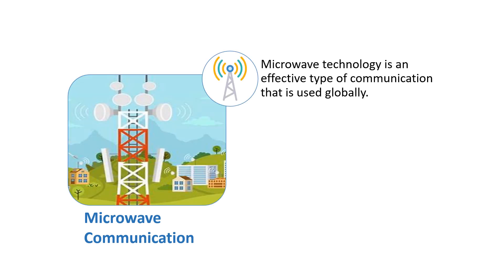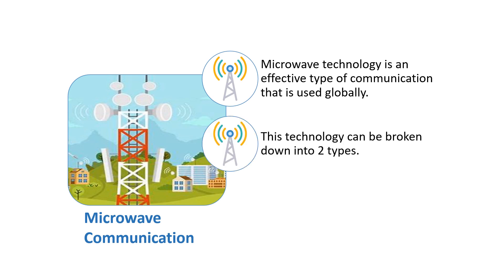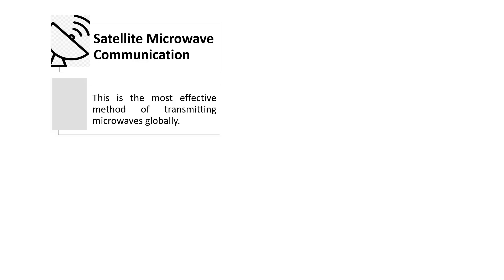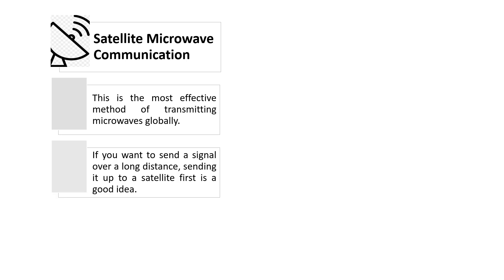The next type of wireless communication is microwave communication. This microwave technology is an effective type of communication used globally and is divided into two types. The first is satellite microwave communication, which is the most effective method of transmitting microwaves globally. If you want to send a signal over a long distance, sending it up to a satellite first is a good idea.